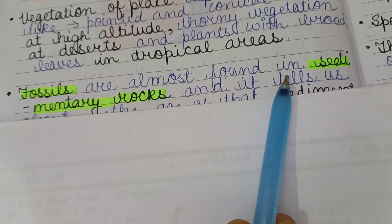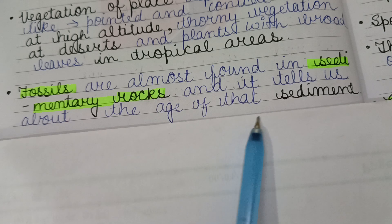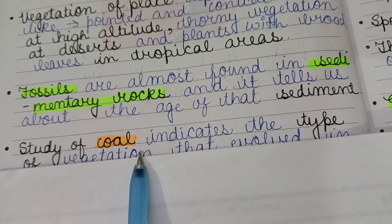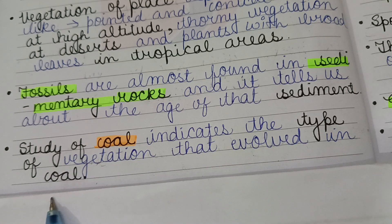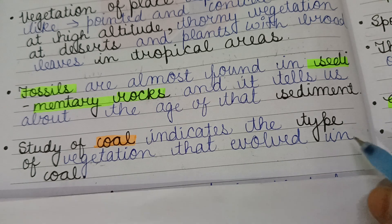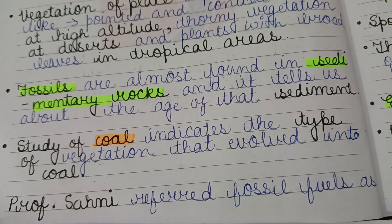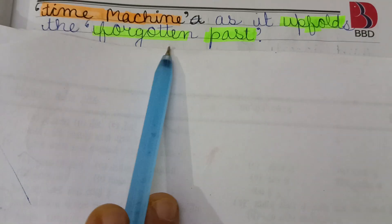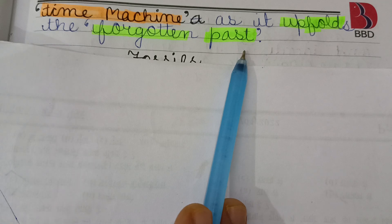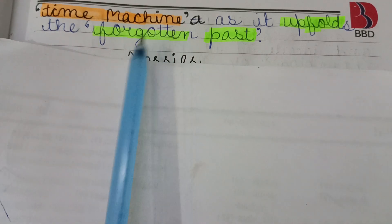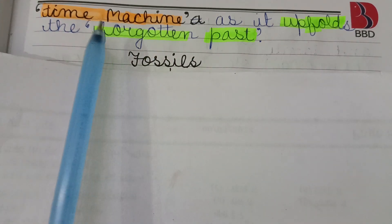Fossils are almost always found in sedimentary rocks, and they tell us about the age of that sediment. Study of coal indicates the type of vegetation that evolved into coal. Professor Sahani referred to fossil fuels as a 'time machine' as they uphold the forgotten past — fossils tell us about things long forgotten.